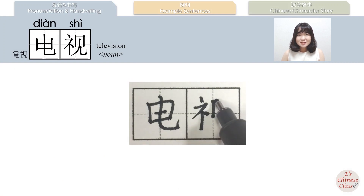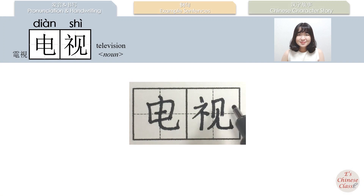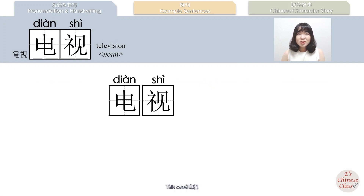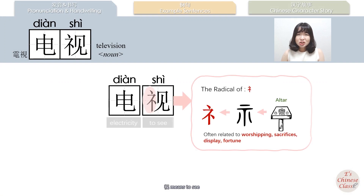电视. This word: 电 means electricity, 视 means to see. So 电视 is television.